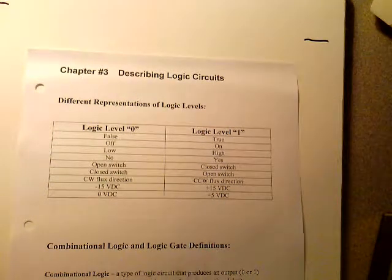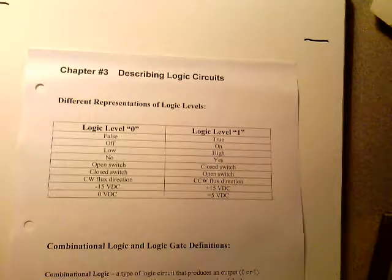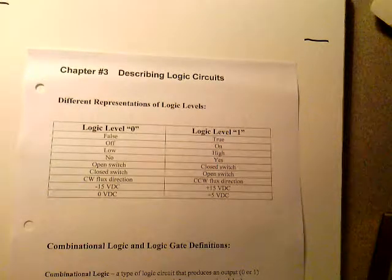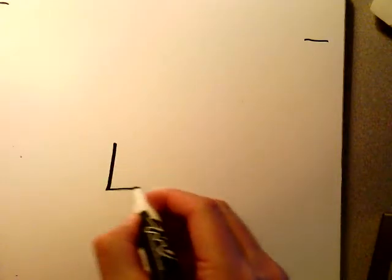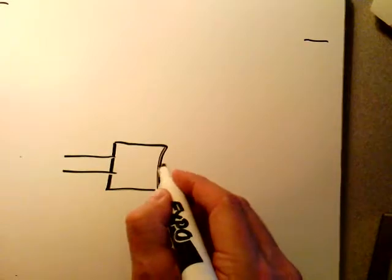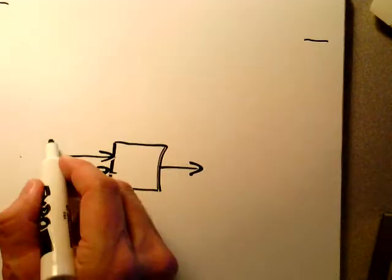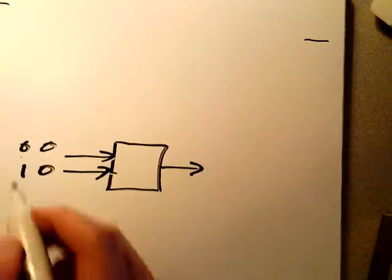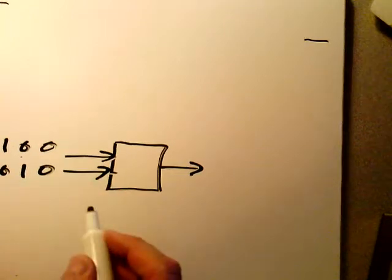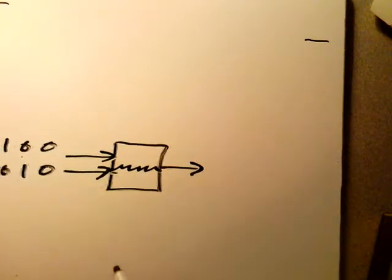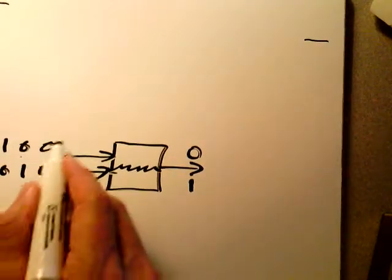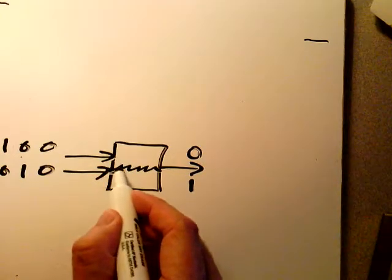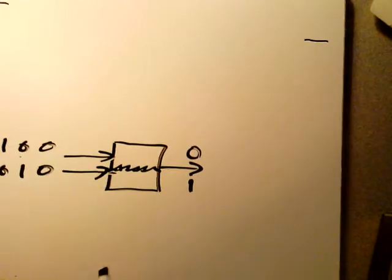Combinational logic and logic gate definitions. Combinational logic is a type of logic circuit that produces an output — either a zero or one — which is a function of the present inputs after a propagation delay. We have a particular gate with two signals coming in as inputs and an output. We set up zero-zero, zero-one, one-zero, and one-one on these inputs, and after a certain period of delay, an output is produced — either a zero or a one. This time it takes for signals to travel through the circuit is called propagation delay.